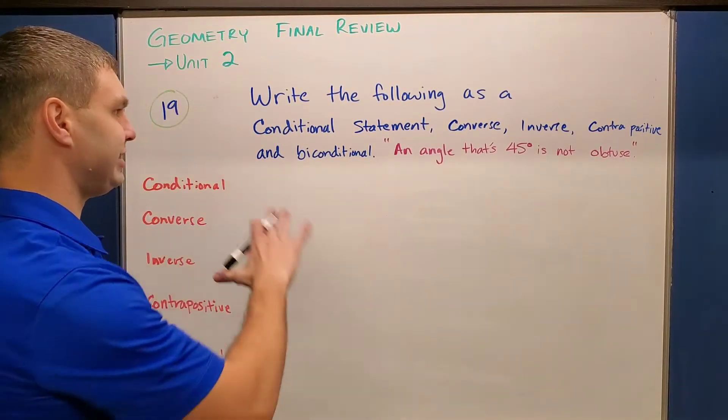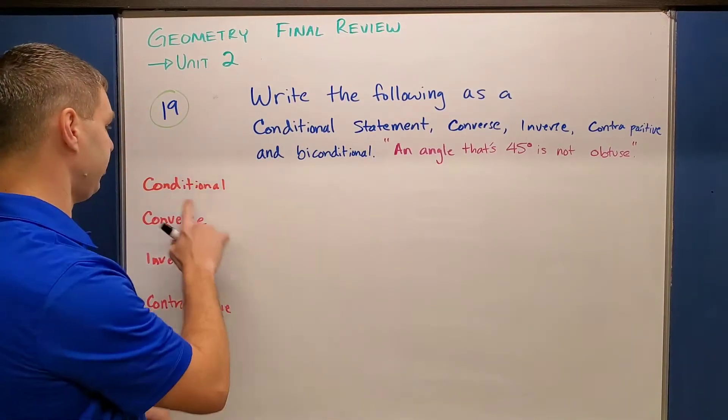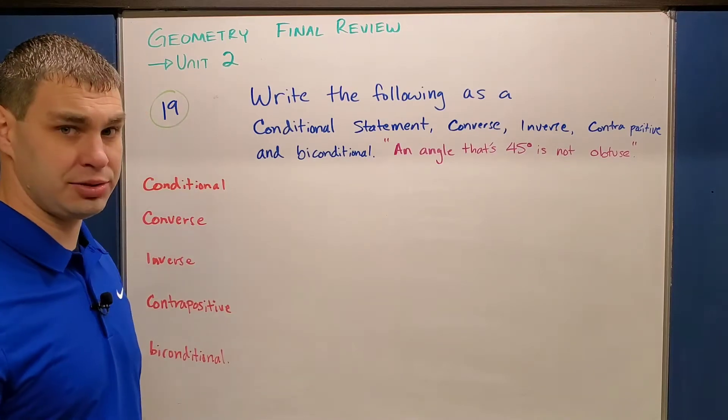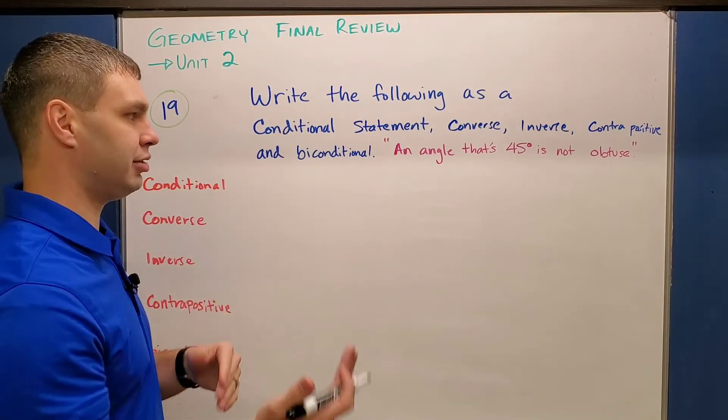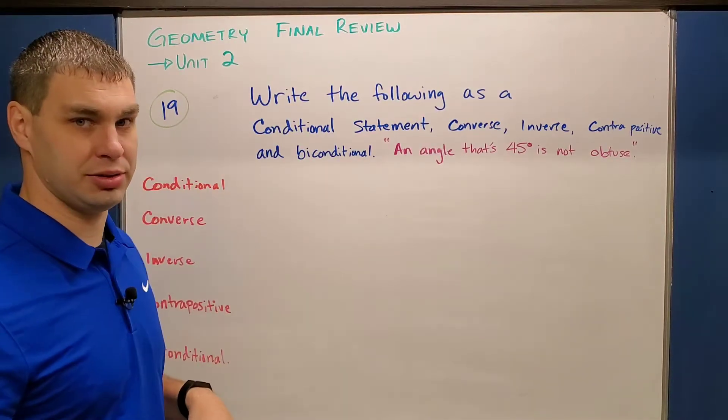So first off, as a conditional statement, that has to be an if-then form. So if you look at what we have here, an angle is 45 degrees is not obtuse. I could say if an angle is 45 degrees, then it is not obtuse. I'll write that for you.